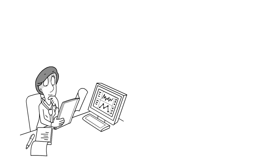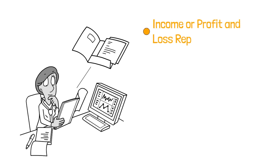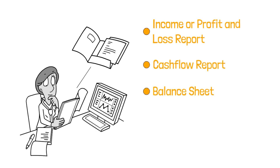There are all kinds of reports that you could run based on the financial transaction data from your business, but in this video we are going to focus on the three main ones. The first is the income or profit and loss report. The second is the cash flow report, and the third is the balance sheet report.